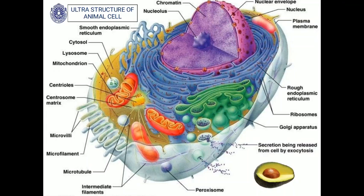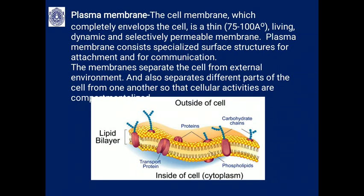The cell organelles are present in a fluid medium called the cytoplasm, with the nucleus at the center. A 3D picture, similar to the structure of a cut-open avocado, helps imagine the typical cell's 3D structure. All these organelles are present in a typical cell and in all metazoans.